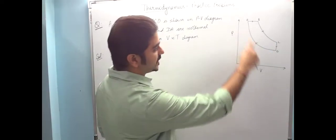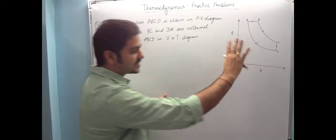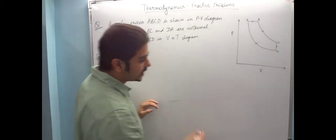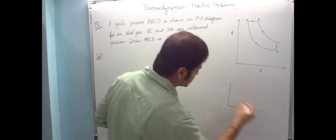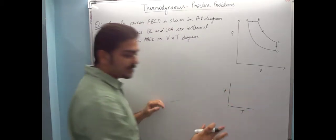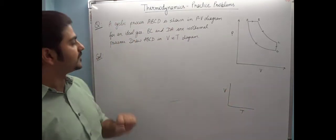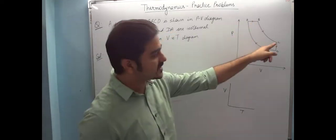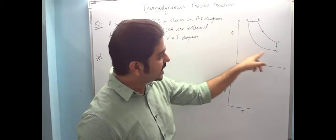We have a process which is ABCD in this way in the P versus V diagram. Then we have V versus T diagram. This is our work. Now, two-three information: first BC and DA, BC is isothermal, DA is isothermal.